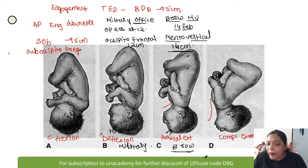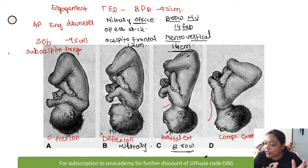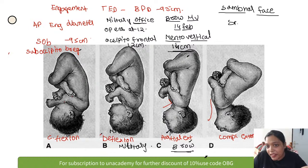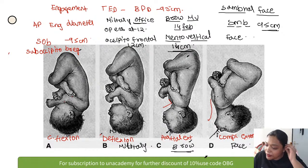For complete extension, the mnemonic is 'Sambar face.' The girlfriend said 'sambar face,' so the last mnemonic = sambar = SMB = submentobregmatic, and complete extension = face presentation = submentobregmatic = 9.5 cm.